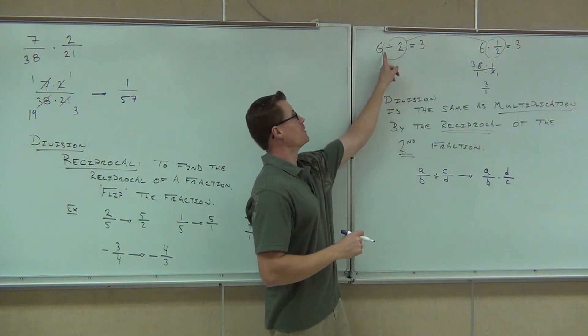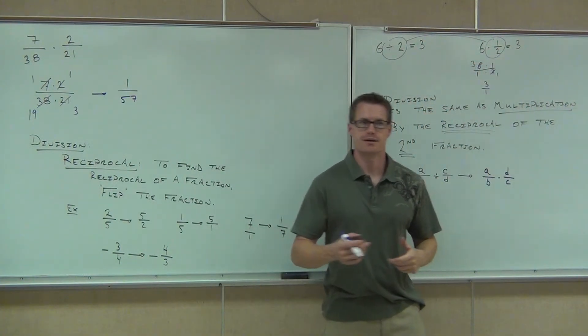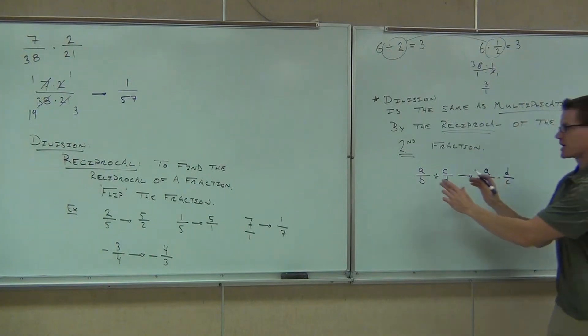In fact, we just did this up here. Division by a number, the same thing as multiplication by the reciprocal of that number. It will give us the same exact answer out of that. This is the way we get around our division. We change our division to a multiplication by the reciprocal.